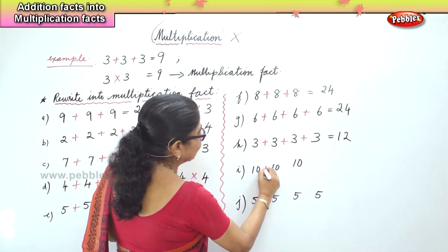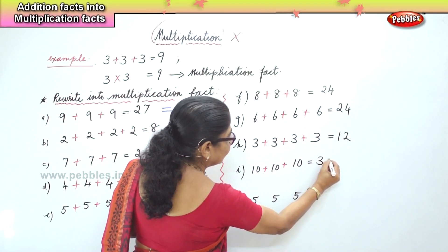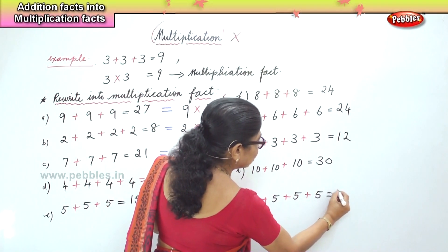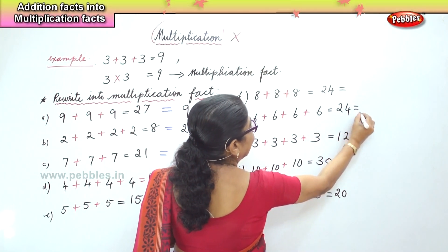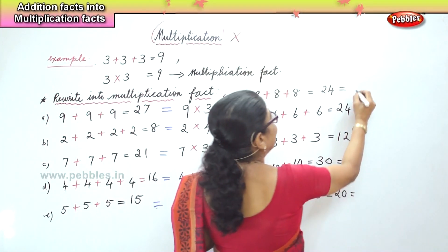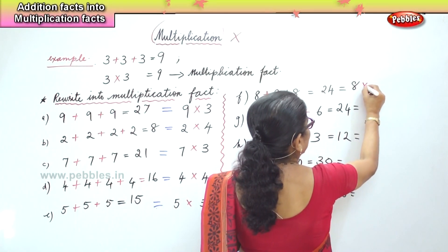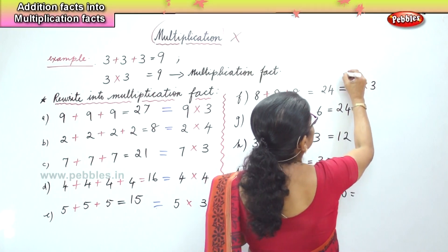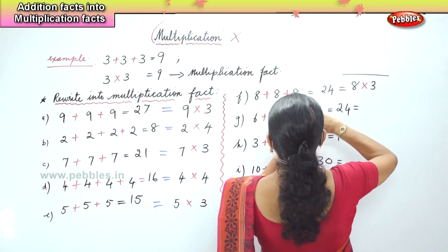10 plus 10 plus 10 equals thirty. Then 5 plus 5 plus 5 equals twenty. Now we need to write down the multiplication fact. Now how do we write? Number 8, how many times? Three times. Eight threes are twenty-four. Now this is the multiplication fact.